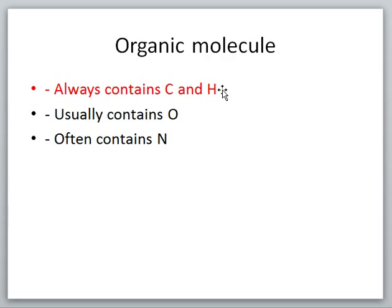Beyond that, those organic molecules that are found in living organisms will usually contain oxygen and quite often will contain nitrogen. So we've got a hierarchy: organic molecules always contain carbon and hydrogen, usually oxygen, often nitrogen. These are the same four elements that make up about 96% of the mass of a living organism. Those four elements are quite important.